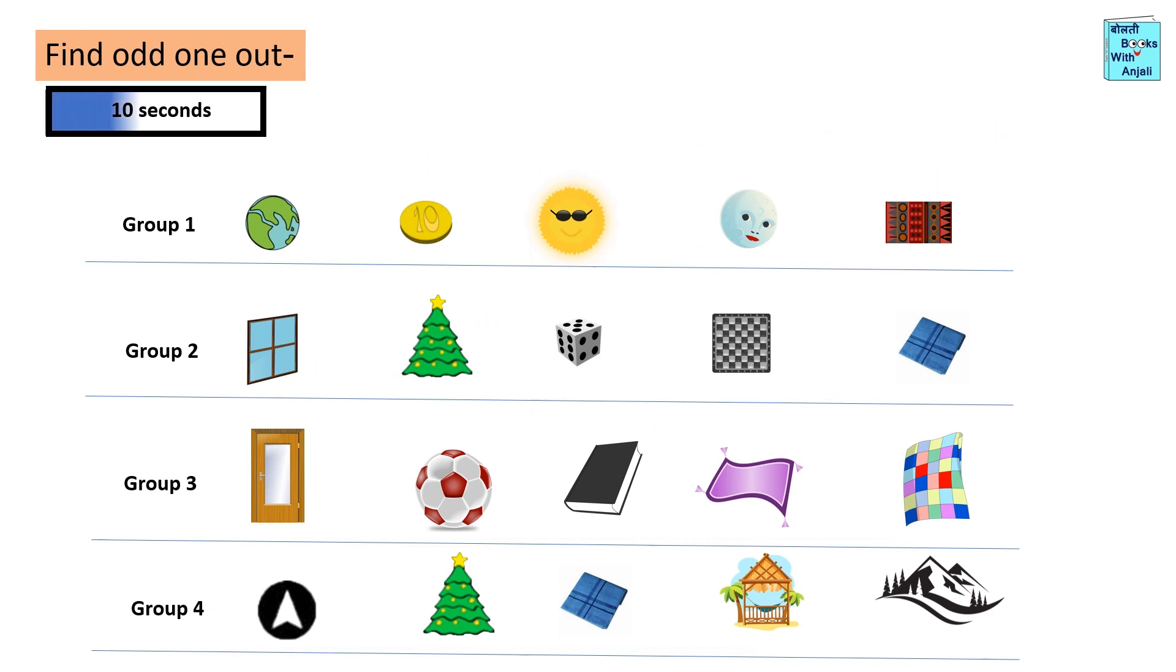In each group, one item is of different shape. Find it out. Group 1, mat. Group 2, Christmas tree. Group 3, ball. Group 4, handkerchief.